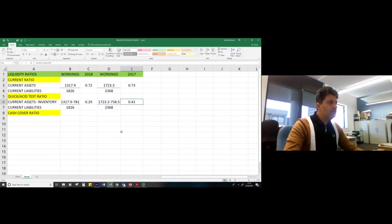And we get our results as 29 pence for a pound in 2018 and 41 pence for a pound for 2017. We can see that the quick ratio has deteriorated quite significantly in 2018 in comparison to 2017.